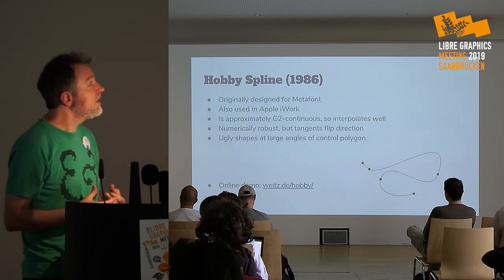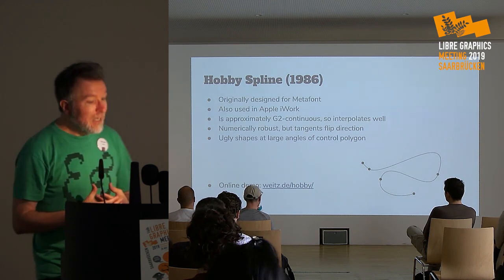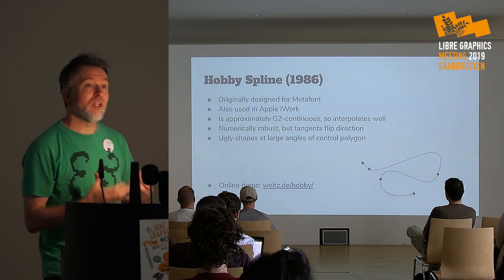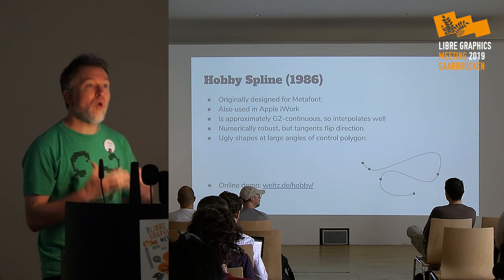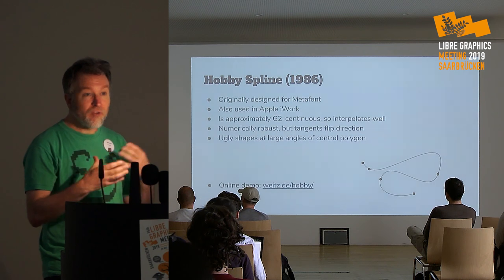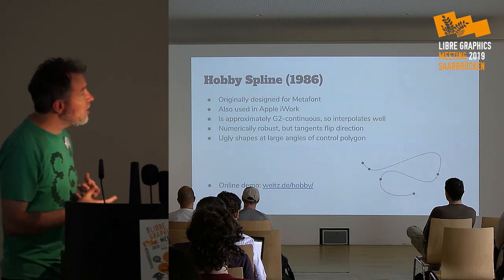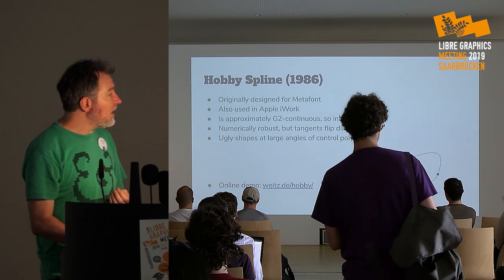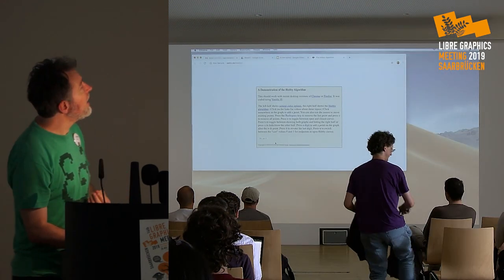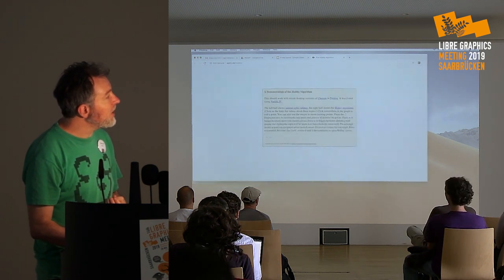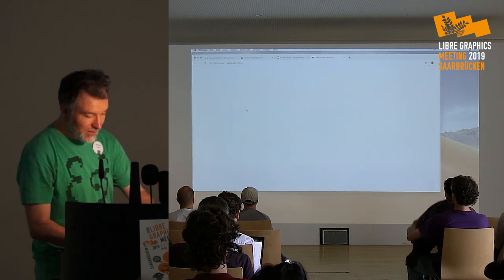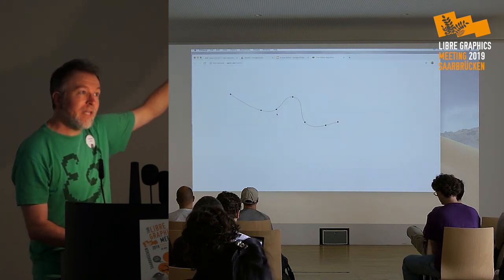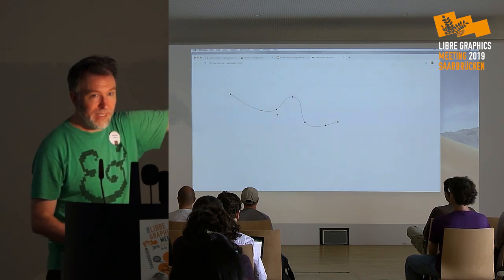The Hobby spline is also used in Apple Keynote for pen-based drawing, so it has applications beyond just fonts. Mathematically it's very solid work — the solver always finds a solution and never fails to converge. But there are things not to like: when you push it hard you get ugly shapes, and it has this flipping behavior. This is an online implementation by Edmund Weitz. You place points down and the curve goes through the points — there are no off-curve control points.